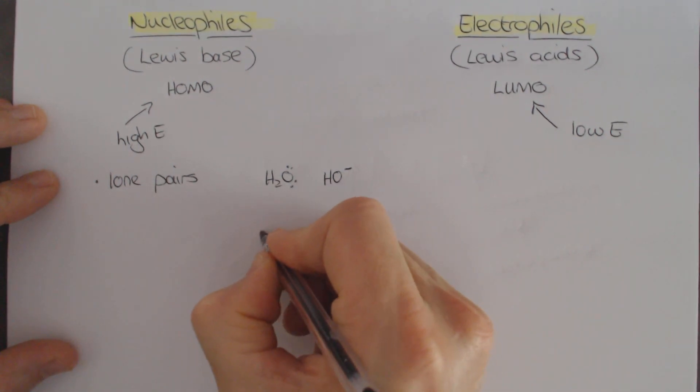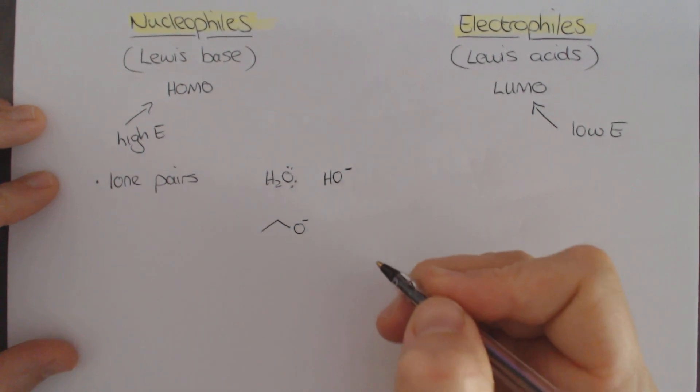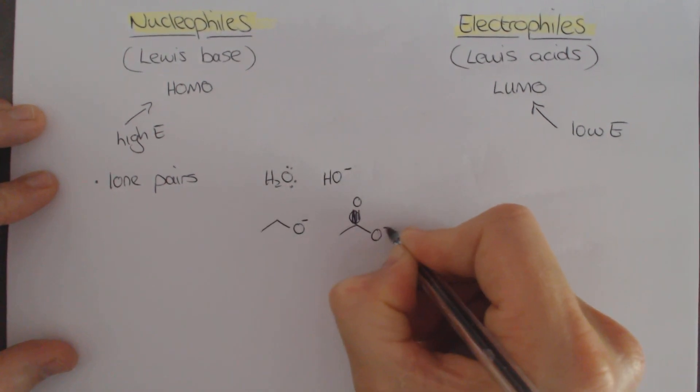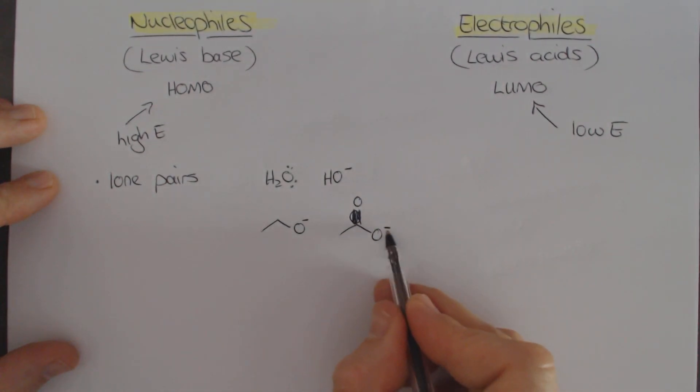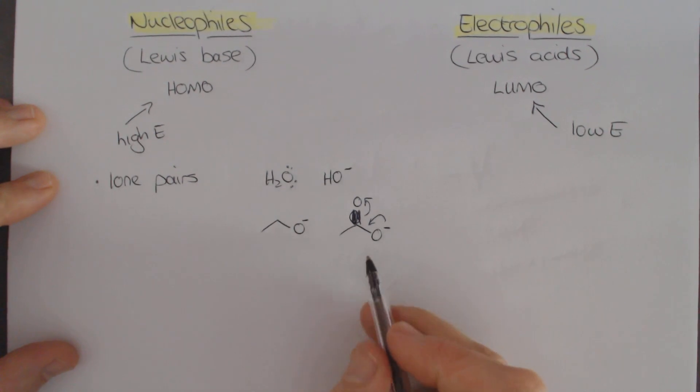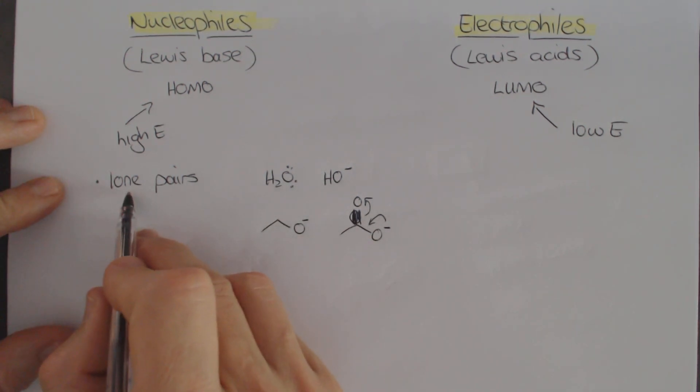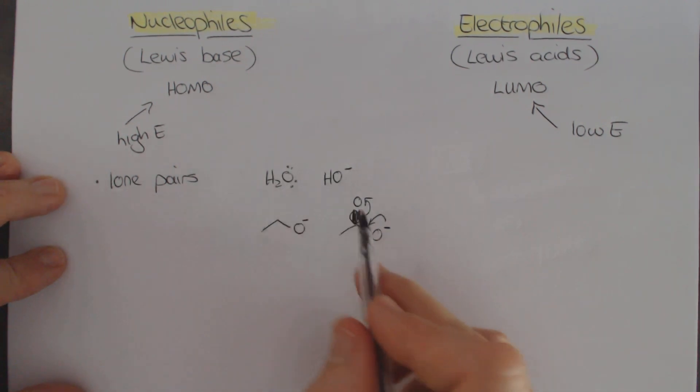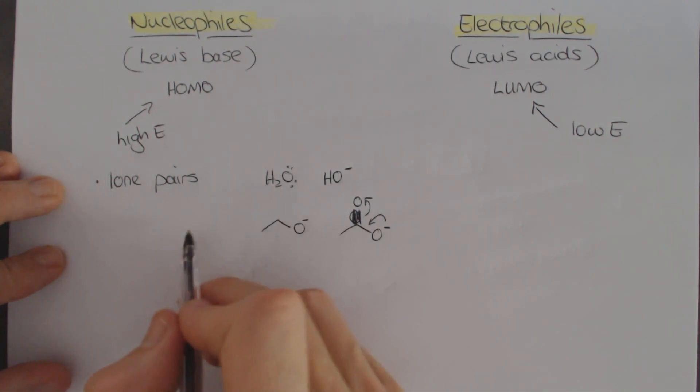The other thing to compare is an oxygen that is negatively charged, and an oxygen that is negatively charged as part of a carboxylate. Both O minuses, but this O minus is resonance stabilized. Because of that, that O minus is not as nucleophilic as this one. So all of these are examples of lone pairs which are nucleophilic, but within that context we can start to analyze and decide which one might be a better nucleophile or not based on that.